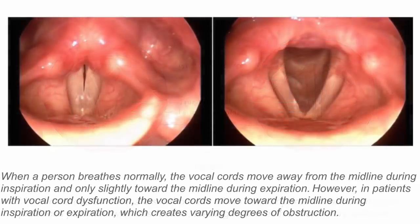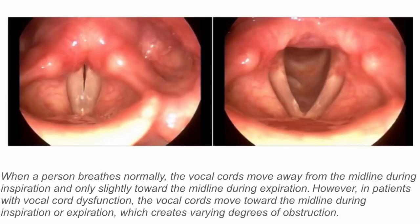When a person breathes normally, the vocal cords move away from the midline during inspiration and only slightly towards the midline during expiration. However, in patients with vocal cord dysfunction, the vocal cords move towards the midline during inspiration or expiration, which creates varying degrees of obstruction.